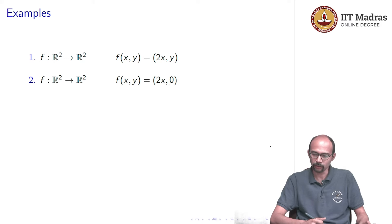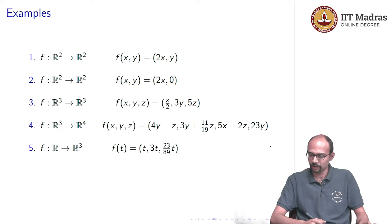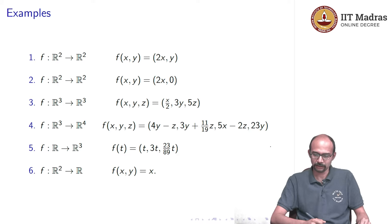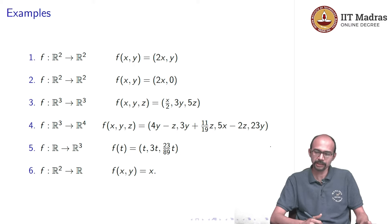A final example is the projection function f(x, y) = x, which projects onto the x-axis — we will see this later in some other context. All these are linear mappings and therefore linear transformations. We will also see non-trivial examples where V or W are not R^m or R^n.